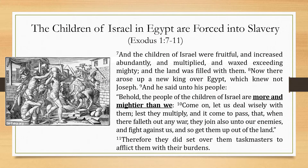The children of Israel are forced into slavery. This is taken from Exodus chapter 1, verses 7 through 11: 'And the children of Israel were fruitful and increased abundantly and multiplied and waxed exceeding mighty, and the land was filled with them. Now there arose up a new king over Egypt which knew not Joseph. And he said, Behold, the people of the children of Israel are more and mightier than we. Come on, let us deal wisely with them, lest they multiply and join also unto our enemies and fight against us. Therefore, they did set over them taskmasters to afflict them.'